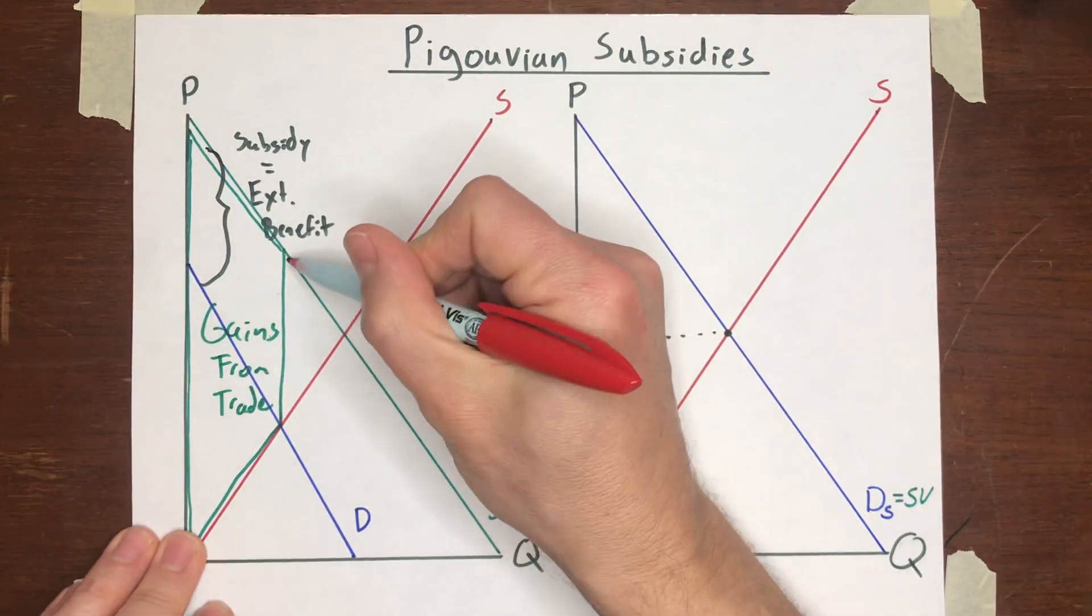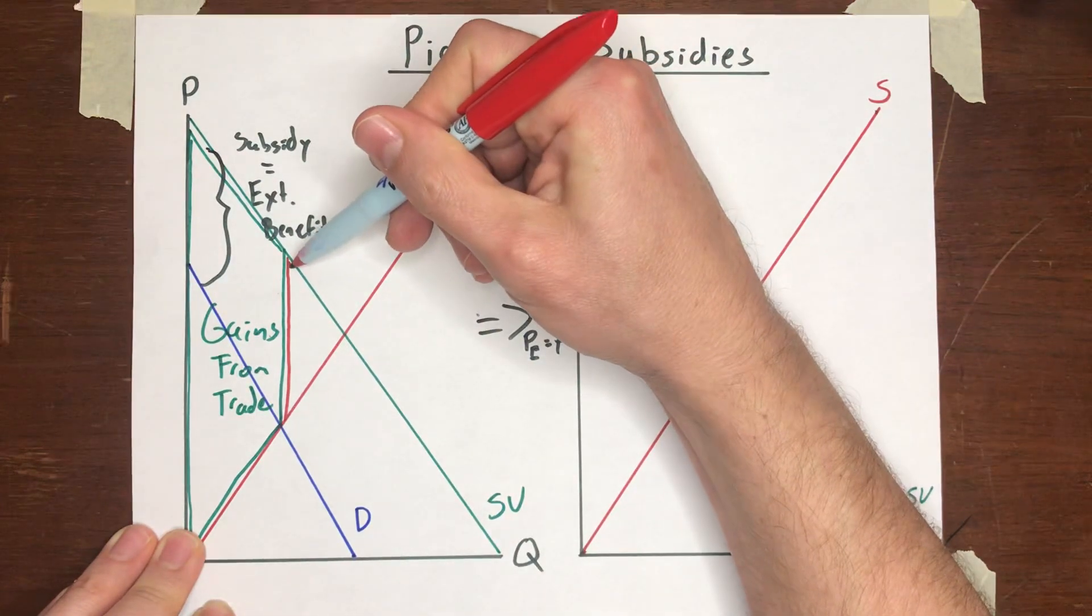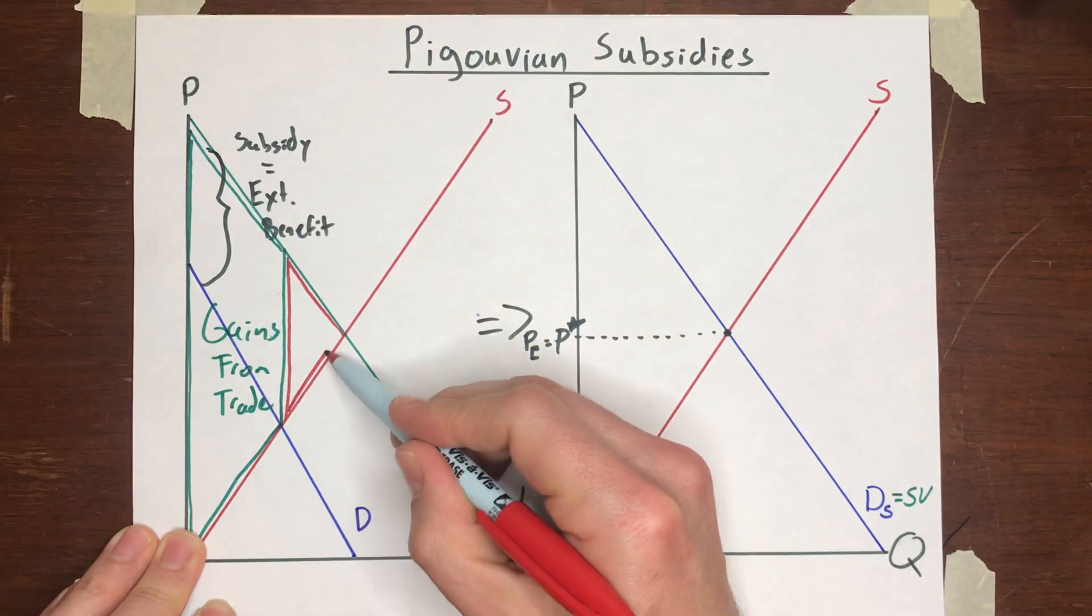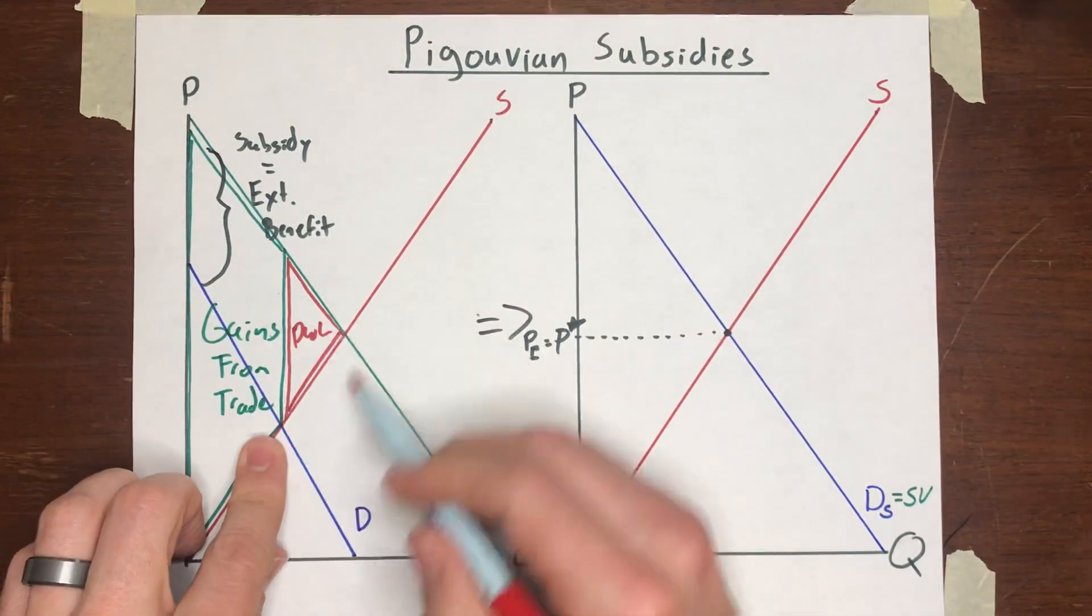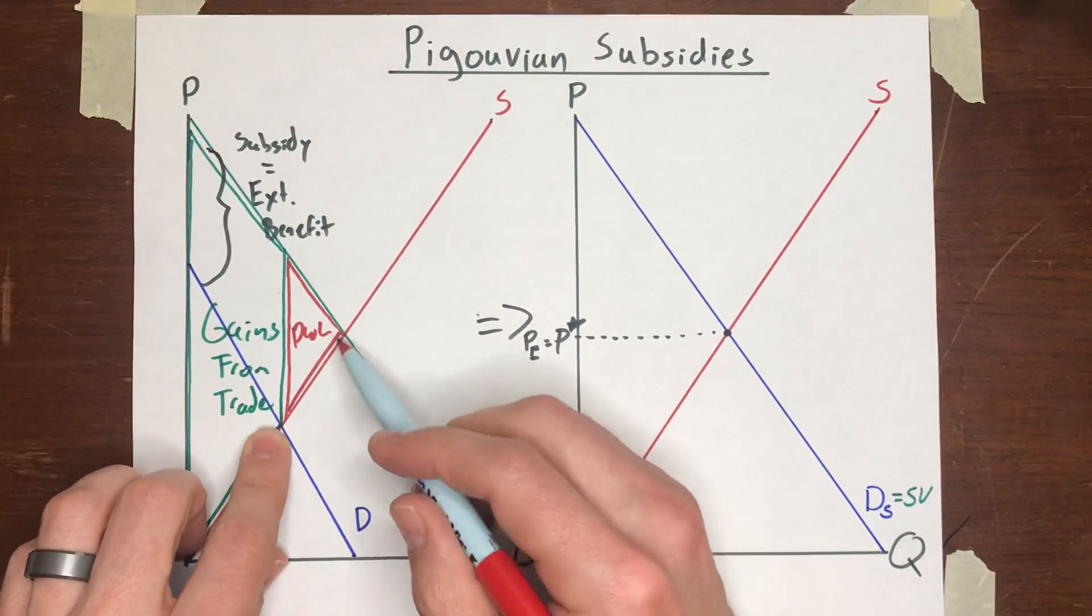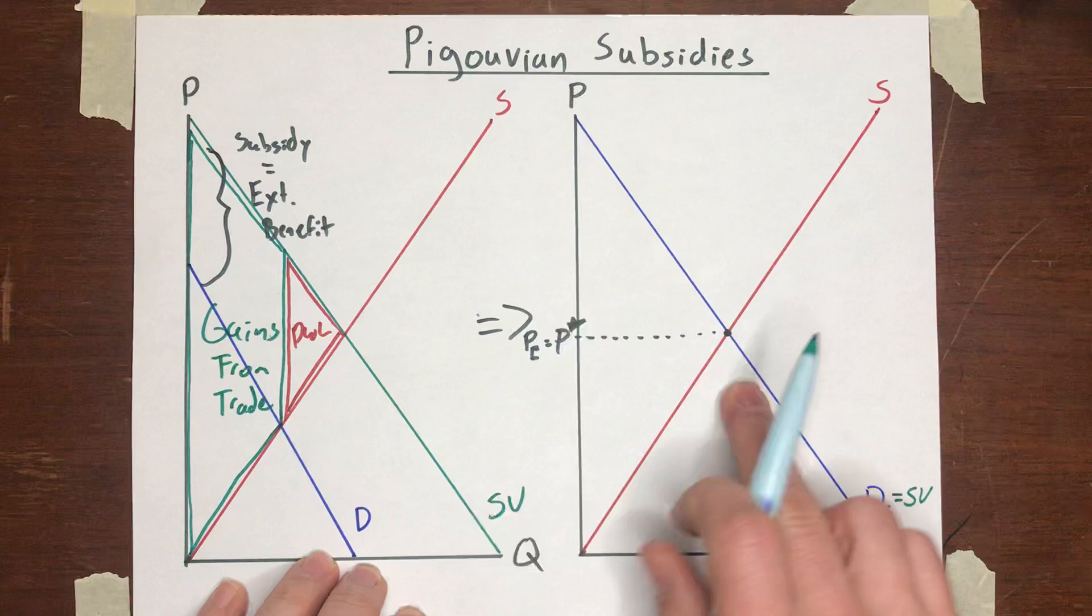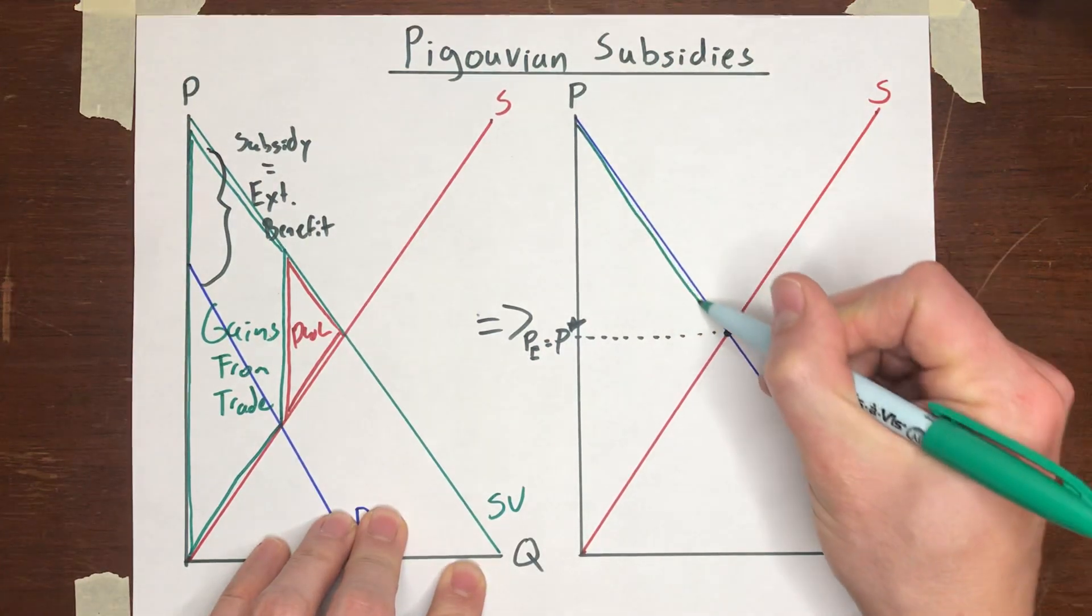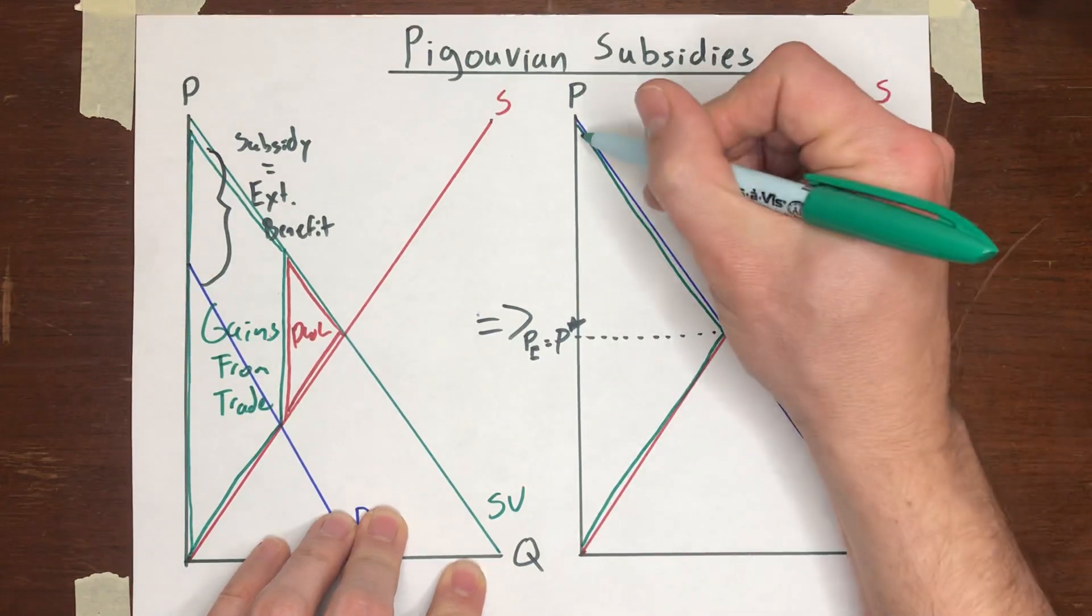There's a deadweight loss to the right of the gains from trade, which is all this area below the social value curve above the supply curve that we're not capturing. Those are gains from trade that society is not getting, but over here, once we've imposed the subsidy or offered the subsidy to the buyers, we're going to capture all of those gains from trade. So the market becomes efficient.